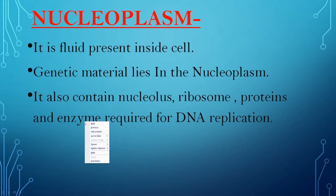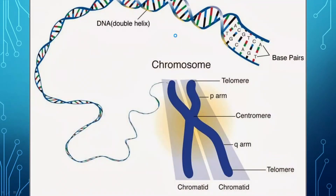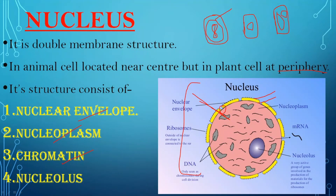Then we speak of nucleoplasm. Nucleoplasm simply means the fluid that is present inside the nucleus. All the genetic material lies within this fluid. Looking at the nucleus diagram, the pink-colored fluid portion is the nucleoplasm. Just as cytoplasm provides the space for all organelles, similarly all structures like chromatin, DNA, and nucleolus are located within the nucleoplasm.